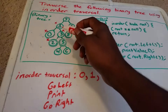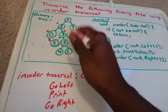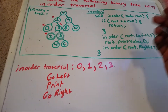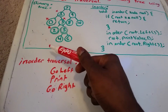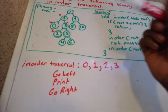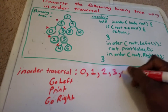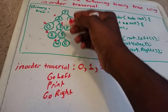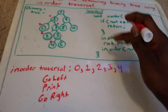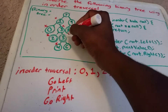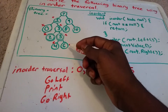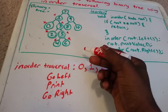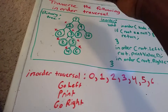Now we go as far right as possible from 3, and we get to 5. 5 is not null; we go left to 4. 4 is not null; to the left of 4 is null, so we return back to 4 and print it. There's nothing to the right of 4, so we return back to 5 and print 5. Then we go to the right of 5 and see 6. We go to the left of 6 — nothing — so we return back to 6 and print it. Nothing to the right of 6 either, so we return back to 5, then back to 3.